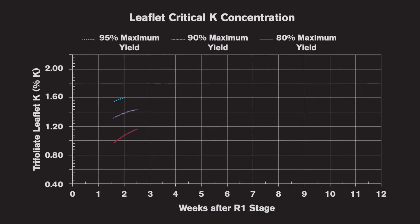We're hoping to increase the utilization of tissue testing in season to help identify hidden hunger in soybean and tell us when and where we might benefit from additional potash applications. One unique thing about this particular tissue testing program is that it's the first dynamic critical concentration for soybean potassium.